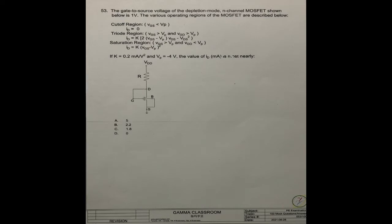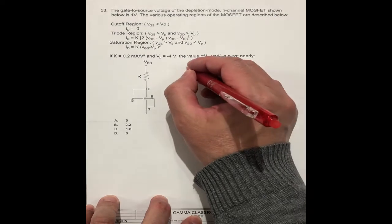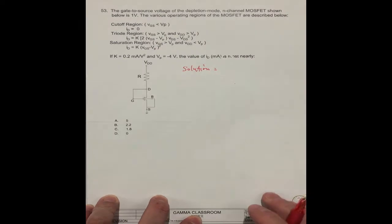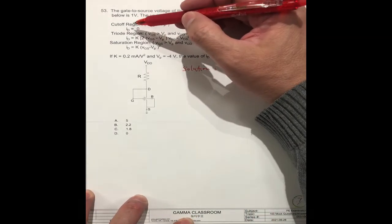If K equals 0.2 milliamps per volt squared, and VP equals minus 4 volts, the value of ID is most nearly what number. They have A, B, C, D, four answers. Actually, all the information is already supplied to you. So you just need to find out what information do you need. So for the solution, the first one you need to check what region is this operating on.